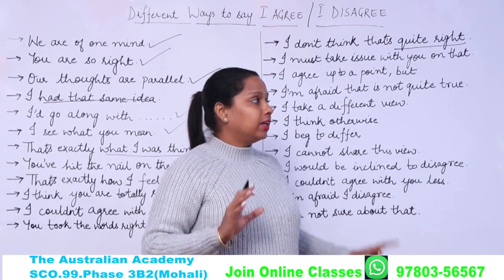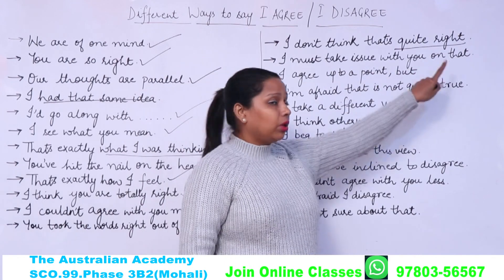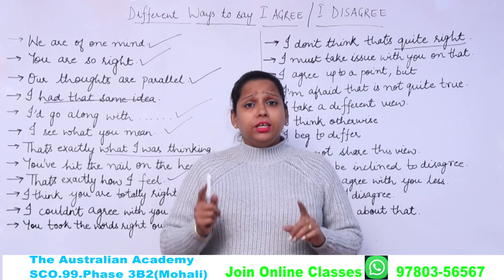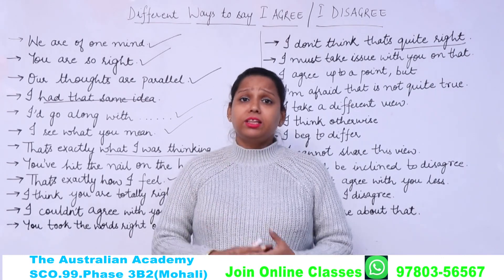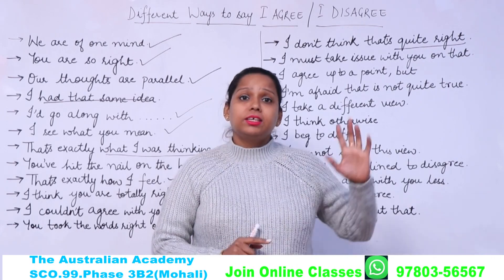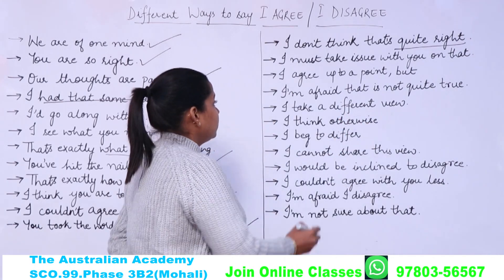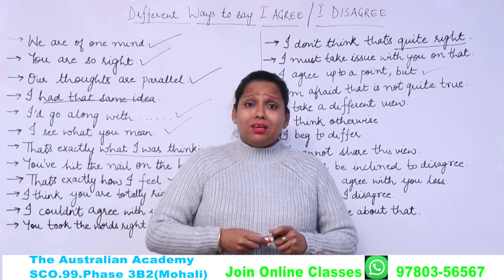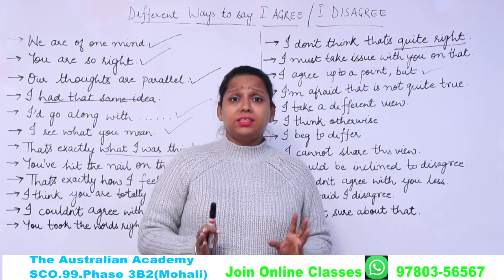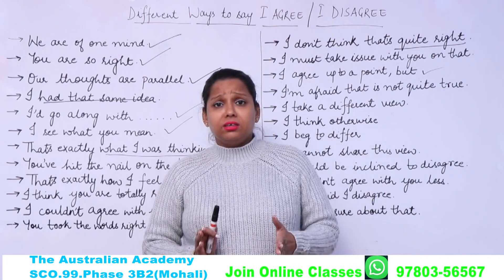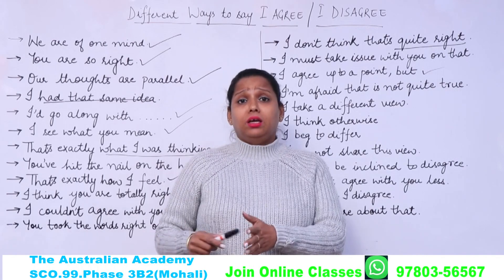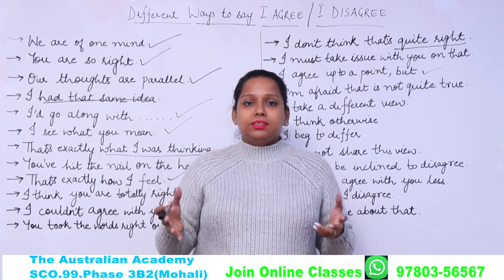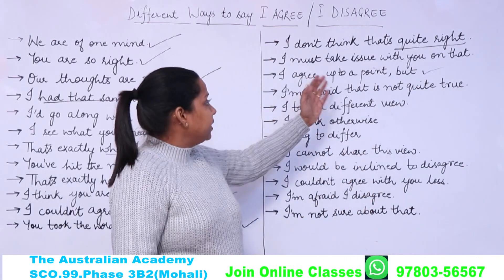Another phrase is 'I must take issue with you on that,' meaning you have some doubt and disagree with whatever is being asked. Then there is 'I agree up to a point, but...' — this is used when you are disagreeing to some extent but there is also a partial agreement. When you need to show a partial kind of answer, you can say 'I agree up to a point, but...'